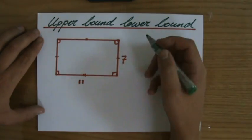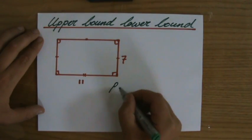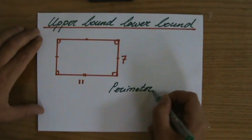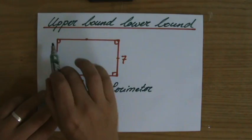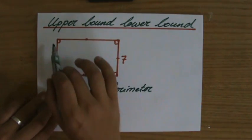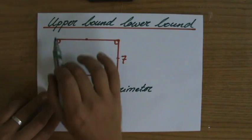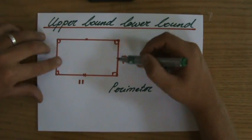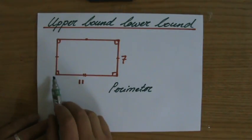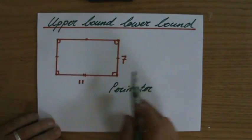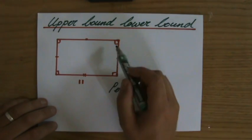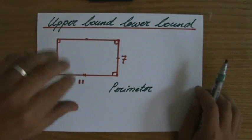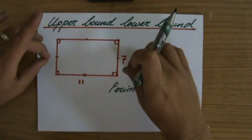First I realize that the perimeter of a rectangle — or any perimeter — is the sum of the lengths of the outside. For a rectangle that is two times the length of one side plus two times the length of the other side. I personally always just add all four sides up. Anyway, the perimeter is the outside.